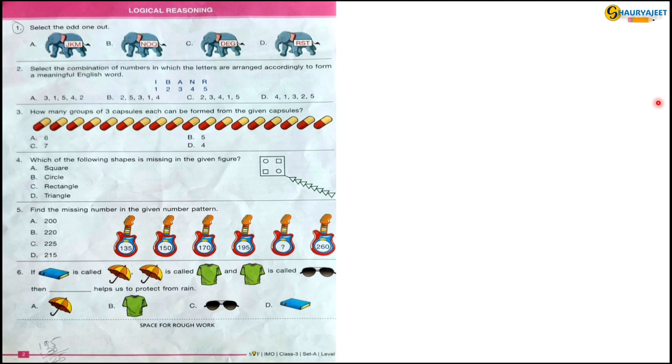Here is the section Logical Reasoning. Question 1: Select the odd one out. They have given us alphabetical order. In the first order L is missing, in the second order P is missing, and in the third F is missing. But in the fourth order no letter is missing, so the correct option is option D, RST.